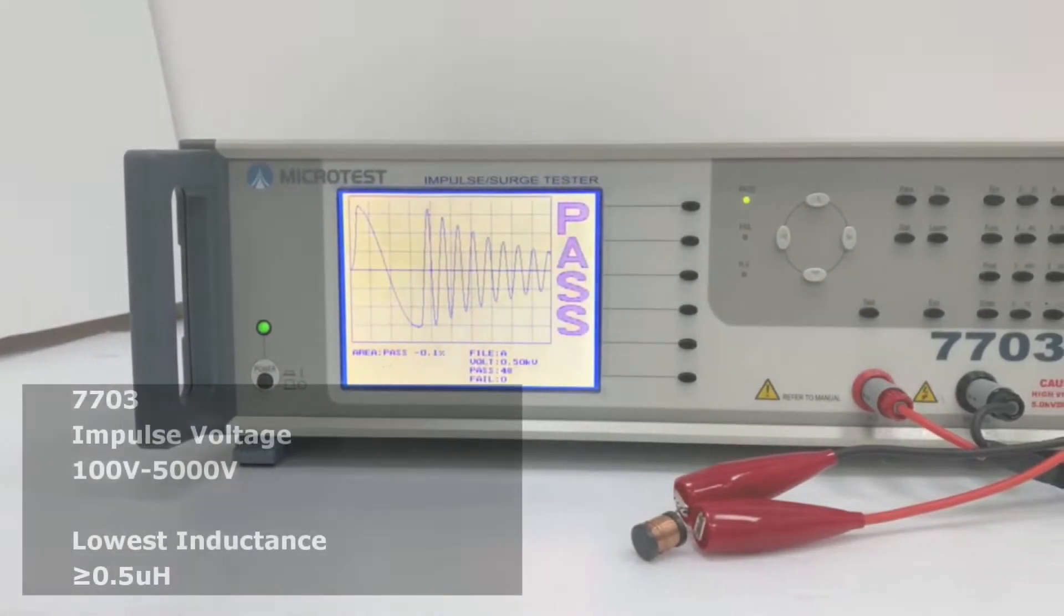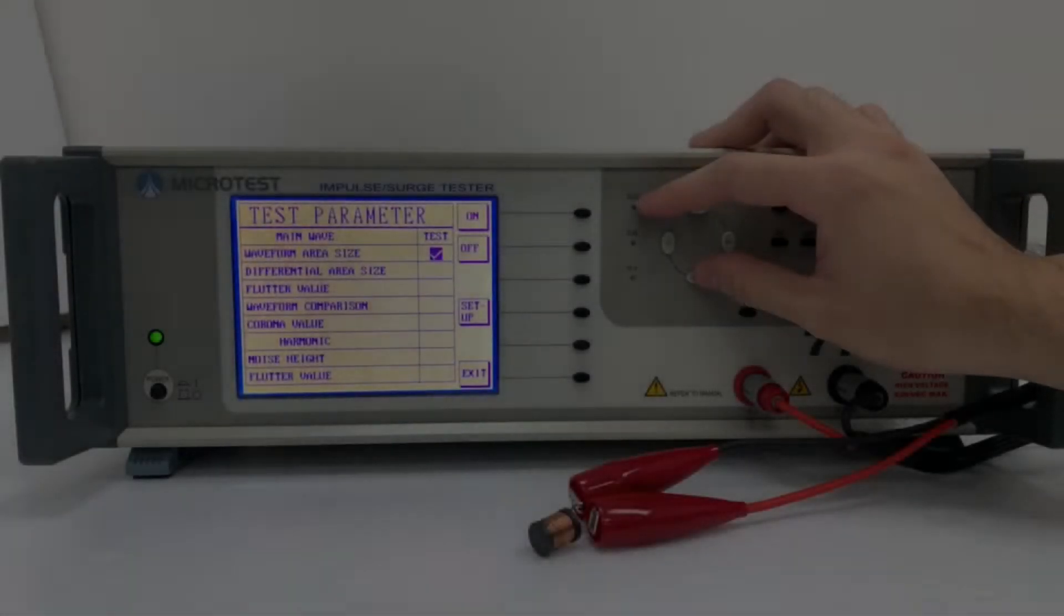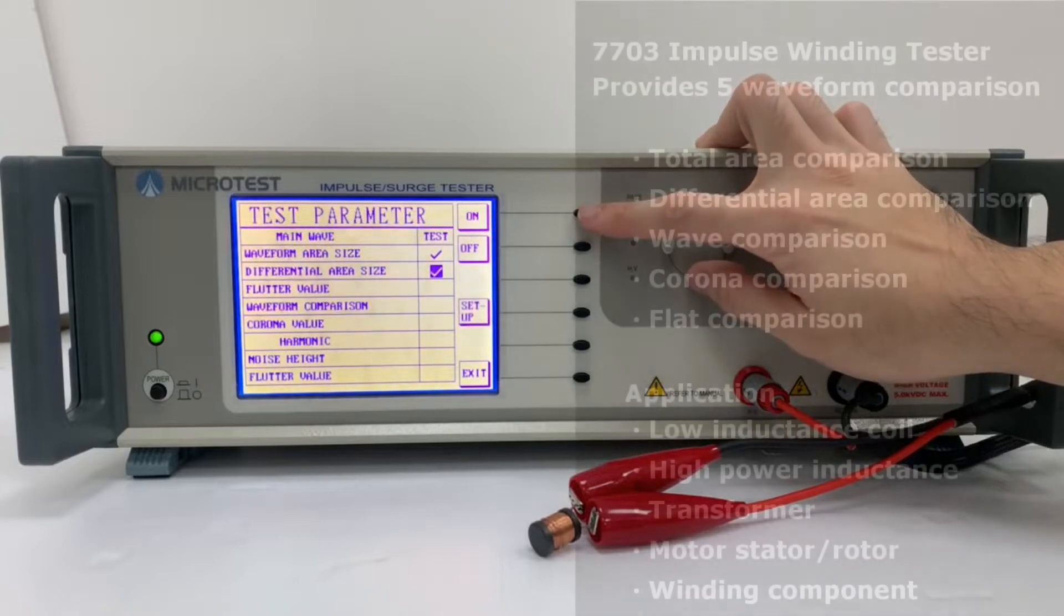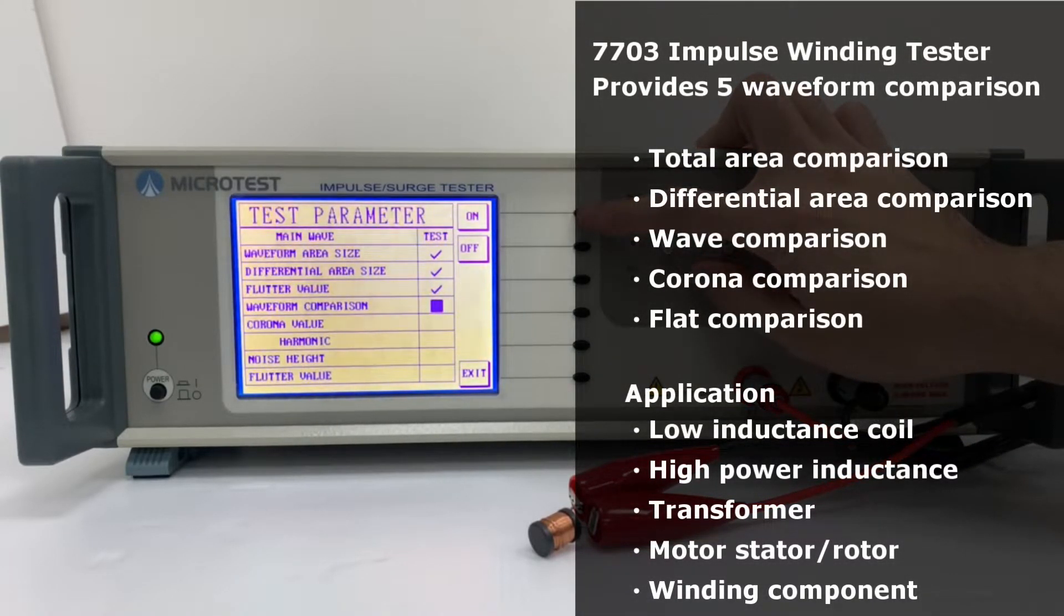MicroTest 7703 Impulse Winding Tester provides high voltage to do the instant pulse test and record the wave. Compare with the golden sample to define the product.